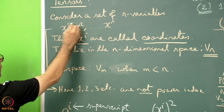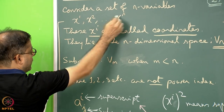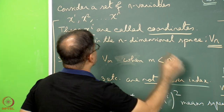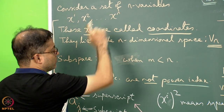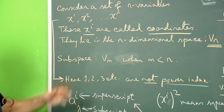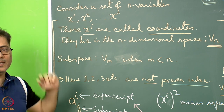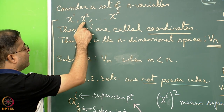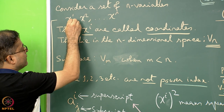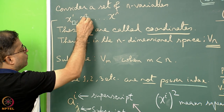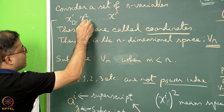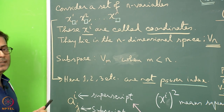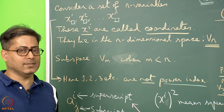To repeat: 1, 2, and n are not power indices — it does not mean x-squared, x-cubed, or x-to-the-n. The reason we write indices at the top rather than the bottom is that it also gives us an opportunity to put numbers at the bottom as subscripts, which becomes important in further studies.